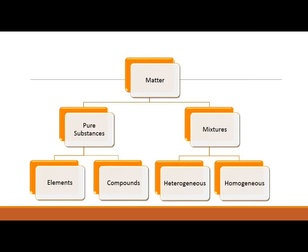Pure substances can be either elements or compounds. The easiest way to tell is to pull out your periodic table and check to see whether the substance in question is on the periodic table. If it is, it's an element. If it's not, it's a compound. So if I say aluminum, you look it up on the periodic table and it's found there — so it's what we call an element. Something like water is a pure substance, but it's not found on the periodic table; it's actually made of hydrogen and oxygen — H₂O — so it's made of two different elements chemically combined together.